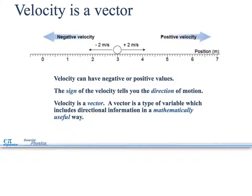Velocity is a vector. Velocity can be negative or positive. The sign of the velocity tells you the direction of motion. So, we have our positive directions, and we have our negative directions. Velocity is a vector. A vector is a type of variable which includes direction, and is very important because it has the velocity, the amount along with it. It has both magnitude and direction, where speed just has magnitude.